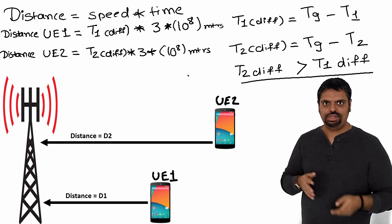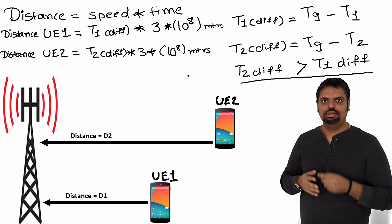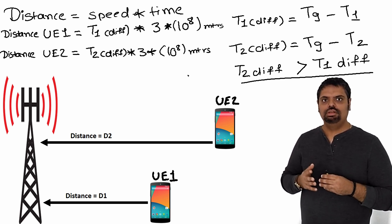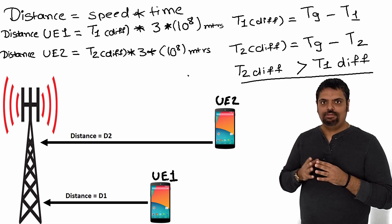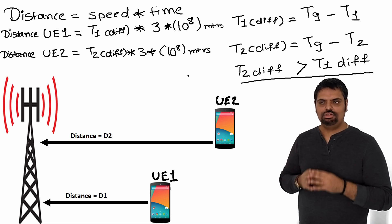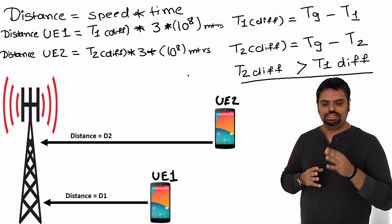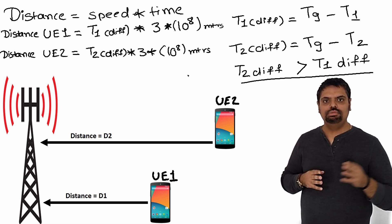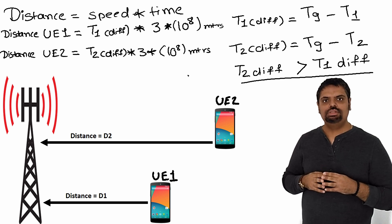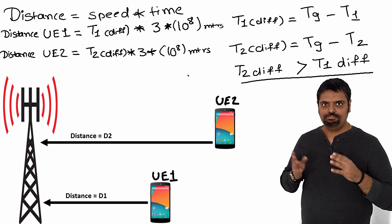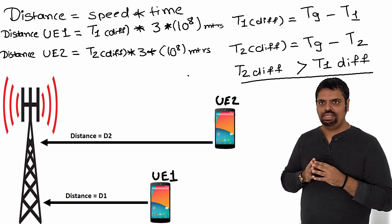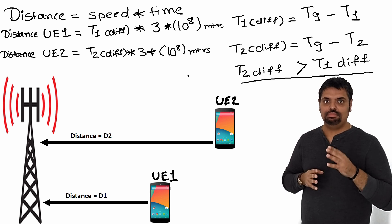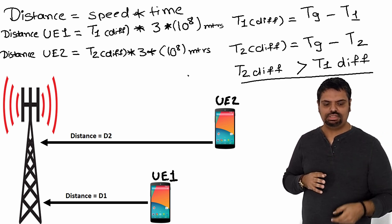Distance equals speed multiplied by time. As you see in this slide, we get the distance of UE1 as well as UE2, which is time multiplied by 3 × 10⁸ meters per second, as the speed of electromagnetic waves is 3 × 10⁸ meters per second.